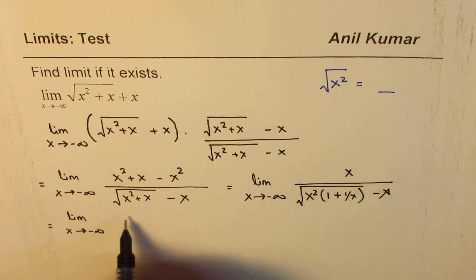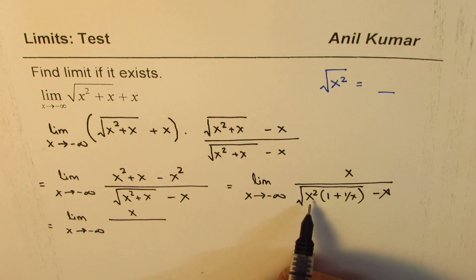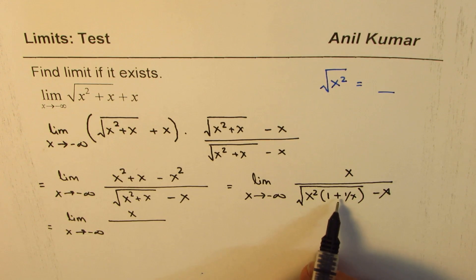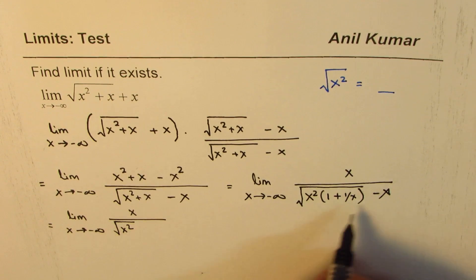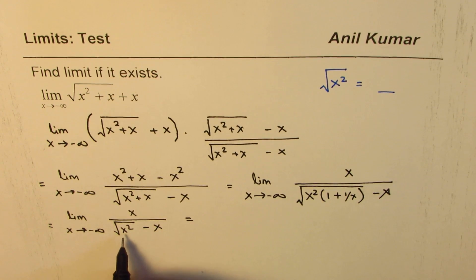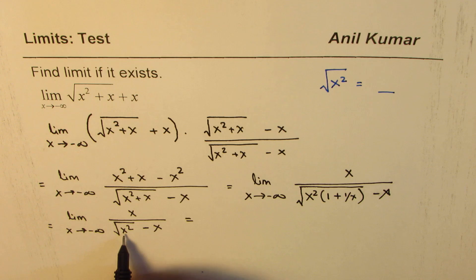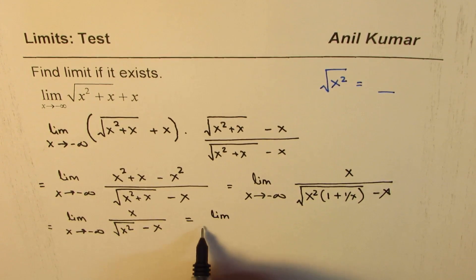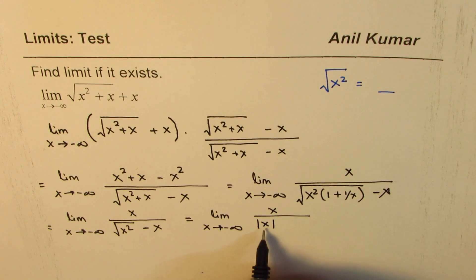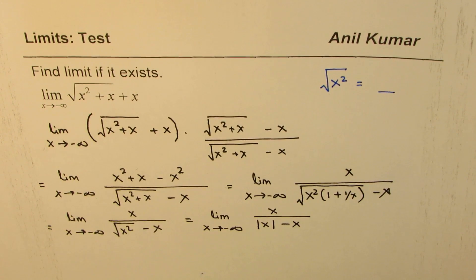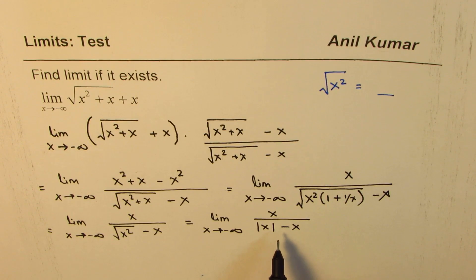We can write this as: limit x approaches minus infinity, x in the numerator, and in the denominator square root of x squared — since 1 plus 1 over x approaches 1 — so we write square root of x squared minus x. Now, square root of x squared is the absolute value of x, not just x. That is where the mistake happens and students don't get the right answer.